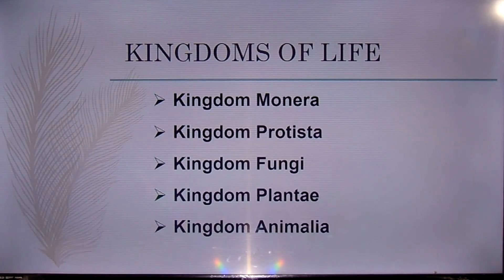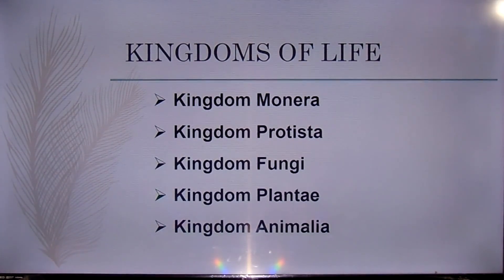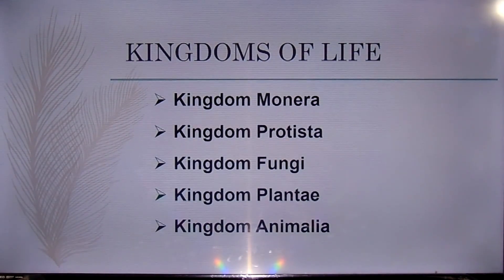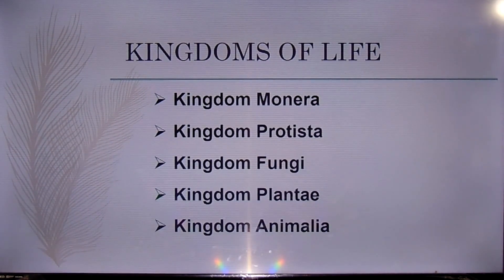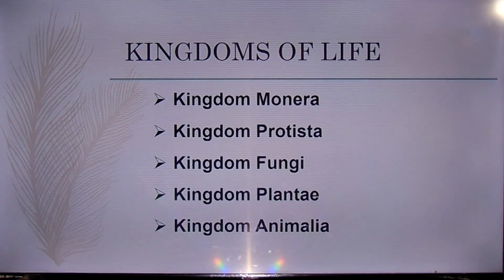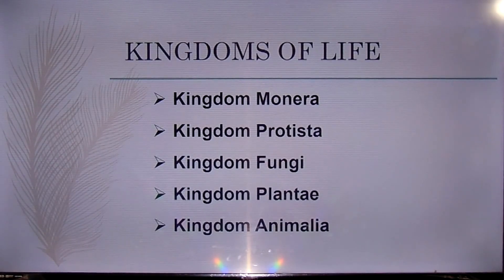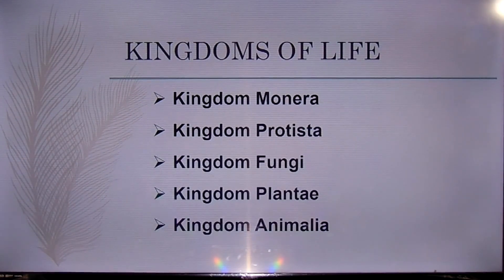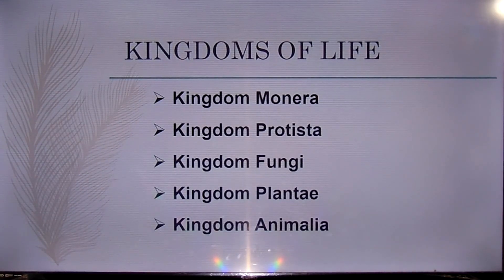Kingdom Monera, the most primitive of the five kingdoms, includes all the bacteria — also called monerans — which are single-celled prokaryotic organisms. In the six-kingdom system, Kingdom Monera is split into two kingdoms: Eubacteria, which are all bacteria apart from Archaebacteria, and Archaebacteria, which are single-celled organisms that live under extreme environmental conditions and have distinctive biochemical features.